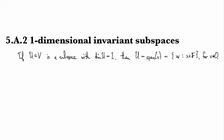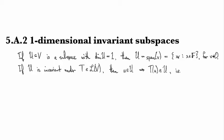If further U is invariant under T, some operator T, then if we start with any element from our invariant subspace, T of it is going to be back in that subspace. Since we know what the shape of this subspace is, it's all scalar multiples of some v.